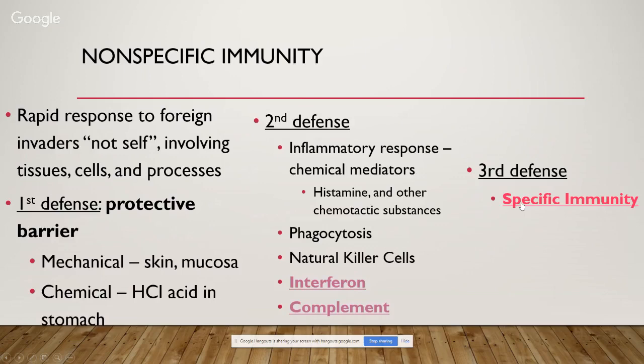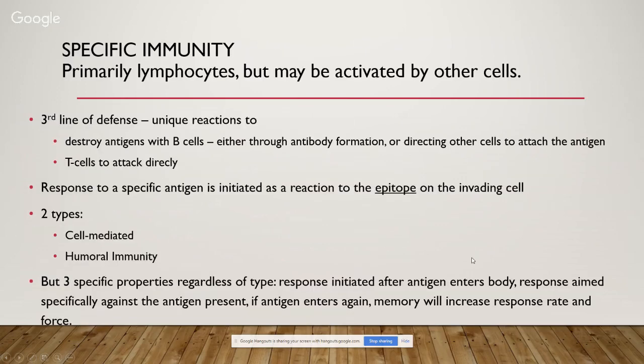The third line of defense is specific immunity, primarily due to lymphocytes. Unique reactions destroy antigens through B cells via antibody formation or directing other cells to attack the antigen, and through T cells attacking foreign objects directly. Specific immunity responds to a specific antigen, initiated by the epitope on the invading cell. There are two types: cell-mediated and humoral immunity. Three specific properties apply regardless of type: the response is initiated after an antigen enters the body, aimed specifically against that antigen, and if the antigen enters again, memory increases the response rate and force.